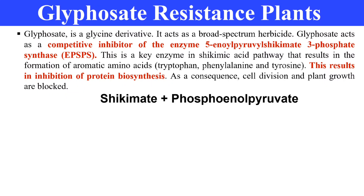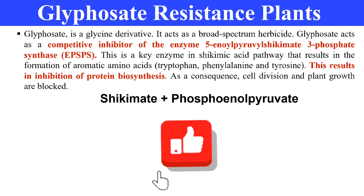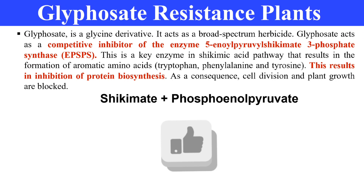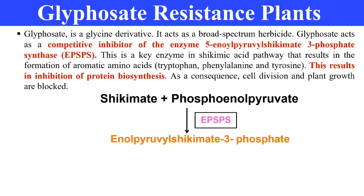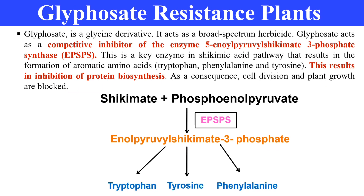EPSPS is a key enzyme in the shikimic acid pathway, which ultimately results in the formation of aromatic amino acids like tryptophan, phenylalanine, and tyrosine. The two substrates are shikimate and phosphoenolpyruvate. EPSPS converts these into enolpyruvyl shikimate-3-phosphate, which is then converted into the aromatic amino acids tryptophan, tyrosine, and phenylalanine. This is the normal process inside the plant.